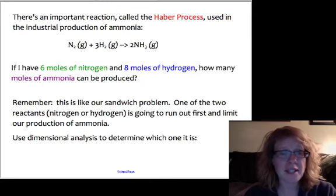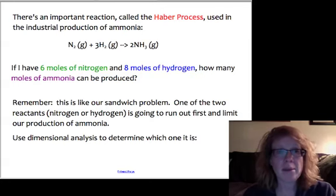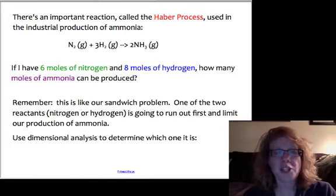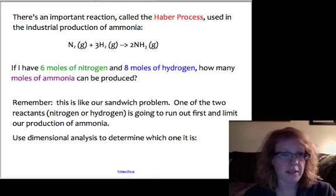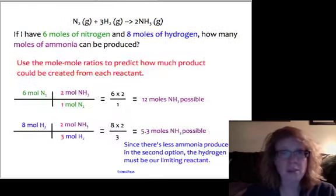So in chemistry, I'll use this Haber process as a great example of a chemical reaction. It's a reaction between nitrogen gas and hydrogen gas to produce ammonia, and it's actually a really important industrial chemical reaction. So given the example that I've got here, if I were to start with 6 moles of nitrogen and 8 moles of hydrogen, how many moles of ammonia could be produced? Again, it's kind of like our sandwich problem. One of those two reactants is going to run out first, but it's hard to tell just by looking at it which one it is. Does the hydrogen run out or does the nitrogen run out? So we use two little mini-dimensional analysis problems to figure this out.